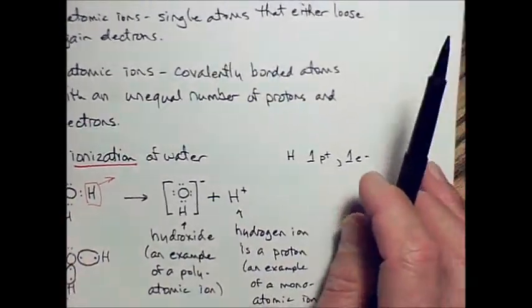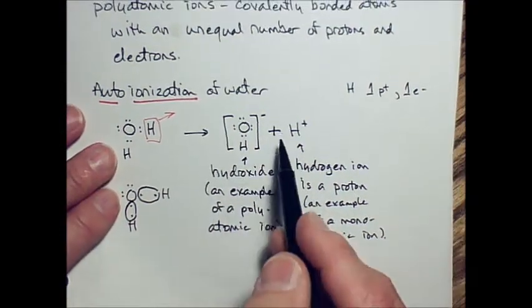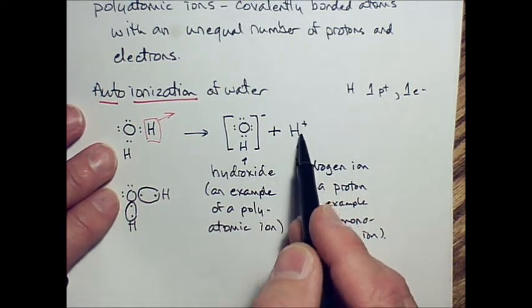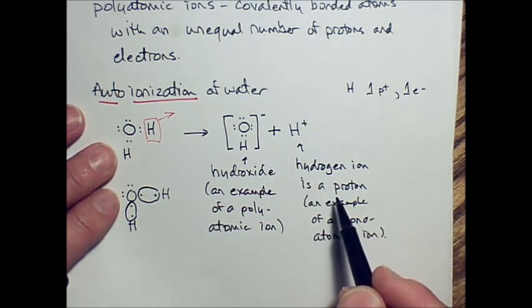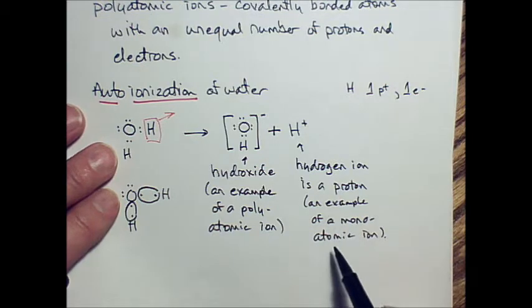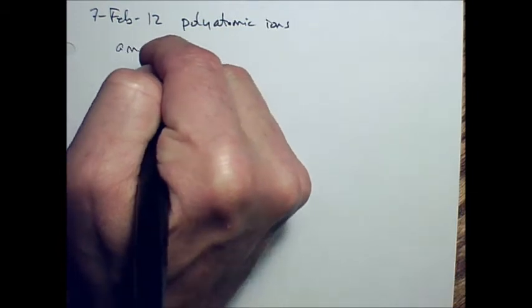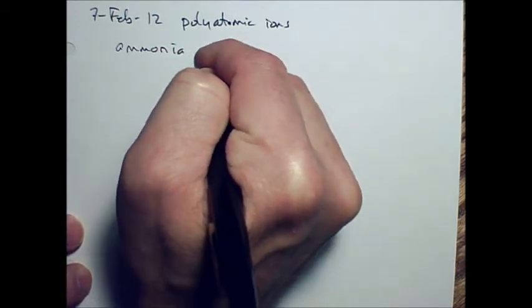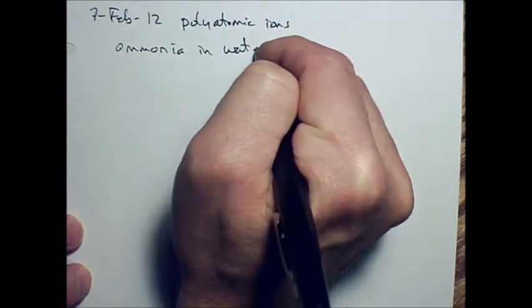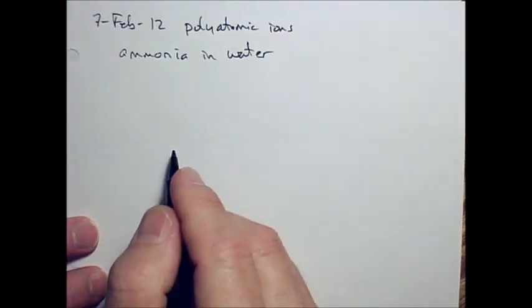We looked at how water autoionizes here, and we've got this hydrogen ion, which for all practical purposes is just a proton. This is an example of a monoatomic ion. What I want to do is look at the effect of that when I put ammonia in water. We're going to put ammonia in water and see what we get.